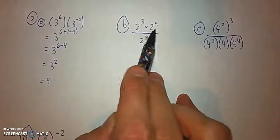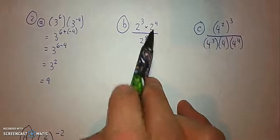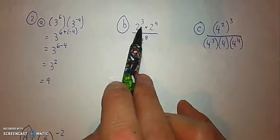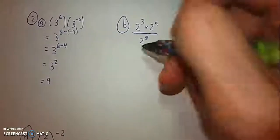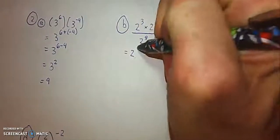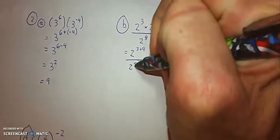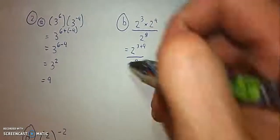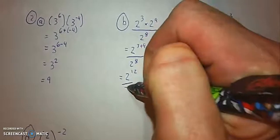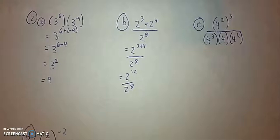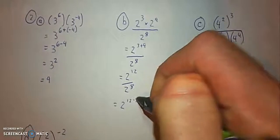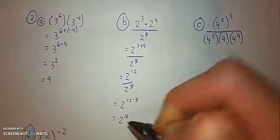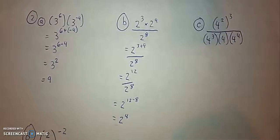For a question like part B where you have a lot of stuff going on in the numerator, a lot of stuff going on in the denominator, once again, it's easiest to just simplify the numerator and the denominator separately. So I'm going to work out what 2 to the power of 3 times 2 to the power of 9 is. And that's 2 to the power of 3 plus 9. That's over 2 to the power of 8. Simplifying the numerator, I get 2 to the power of 12 over 2 to the power of 8. And now I can apply the exponent law for division, which is subtracting the exponents, which is 2 to the power of 12 minus 8, which is 2 to the power of 4, which as we know from a previous example is 16.